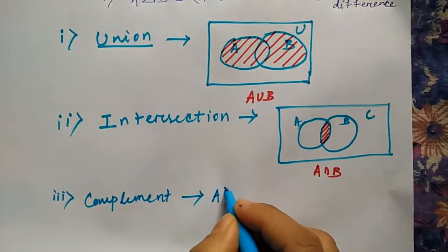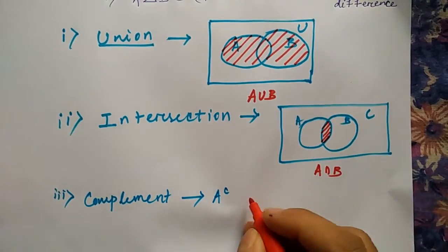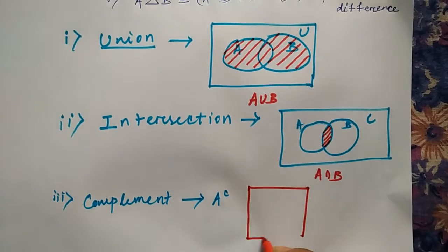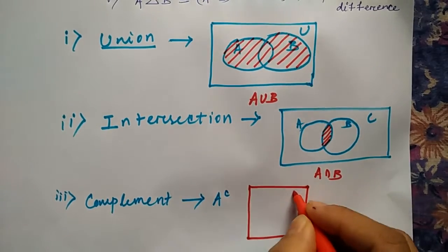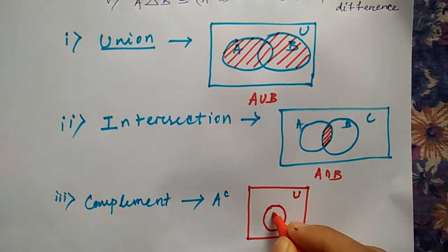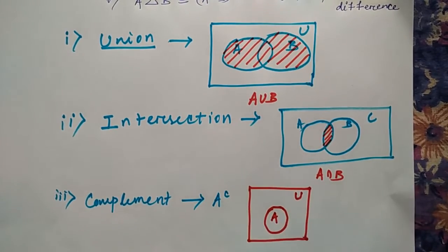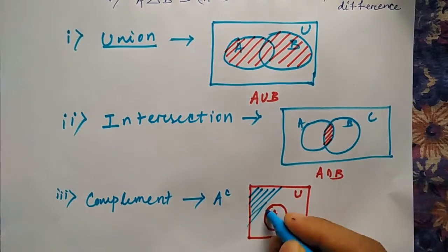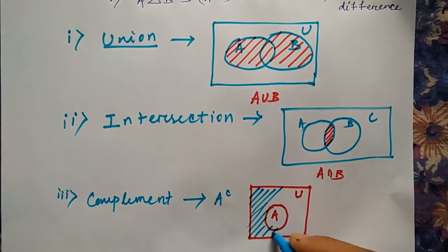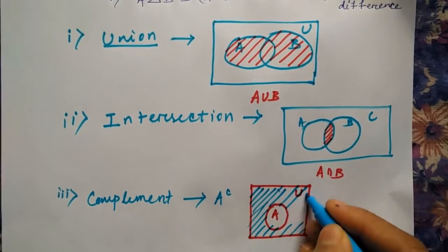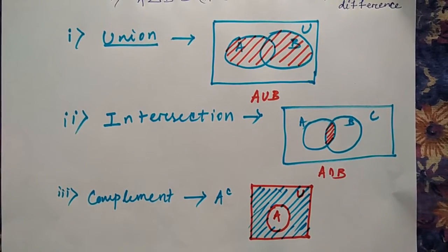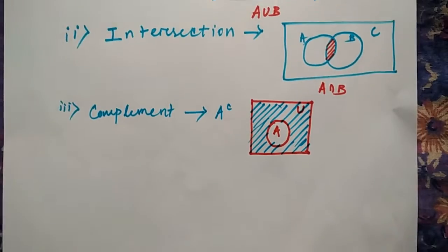For the complement — let's say A complement — if this is the universal set and this is the set A, then the part which doesn't come under A but comes under U, that will be the complement part.